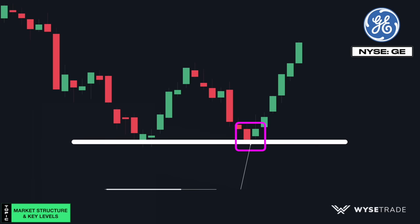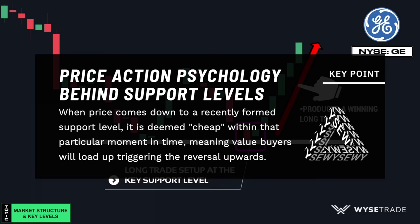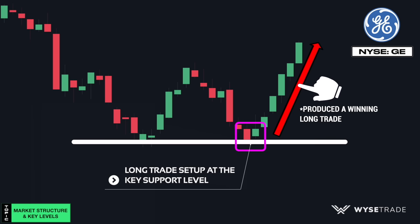From a price action standpoint, when price comes down to a recently formed support level, it is deemed cheap within that particular moment in time, meaning value buyers will take advantage and load up on long positions, triggering the reversal upwards.